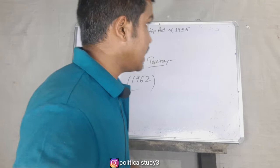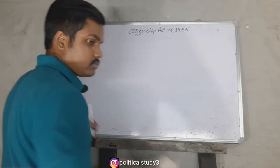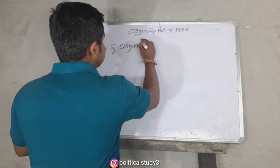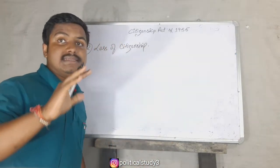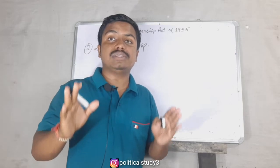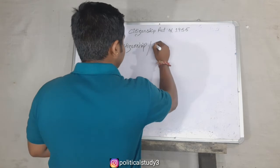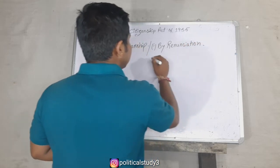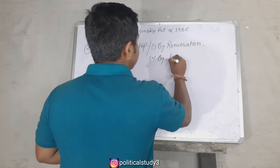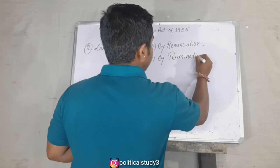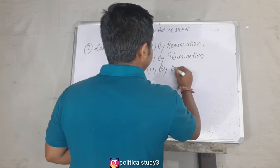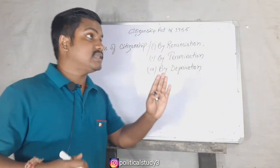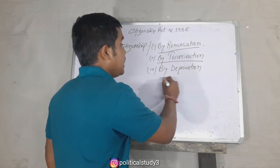Now let us move to our second major point: loss of citizenship — how a person can lose his or her citizenship. There are three ways through which a person can lose citizenship: first by renunciation, second by termination, and third by deprivation.